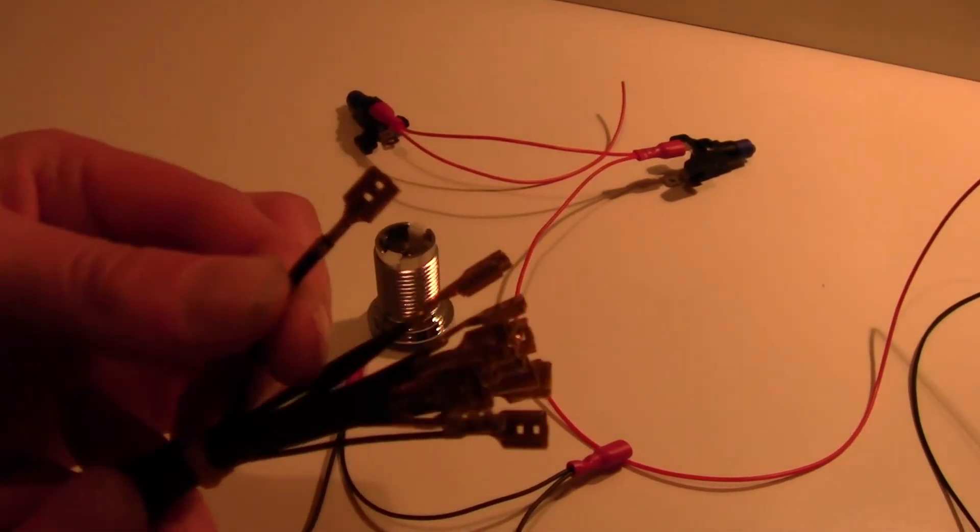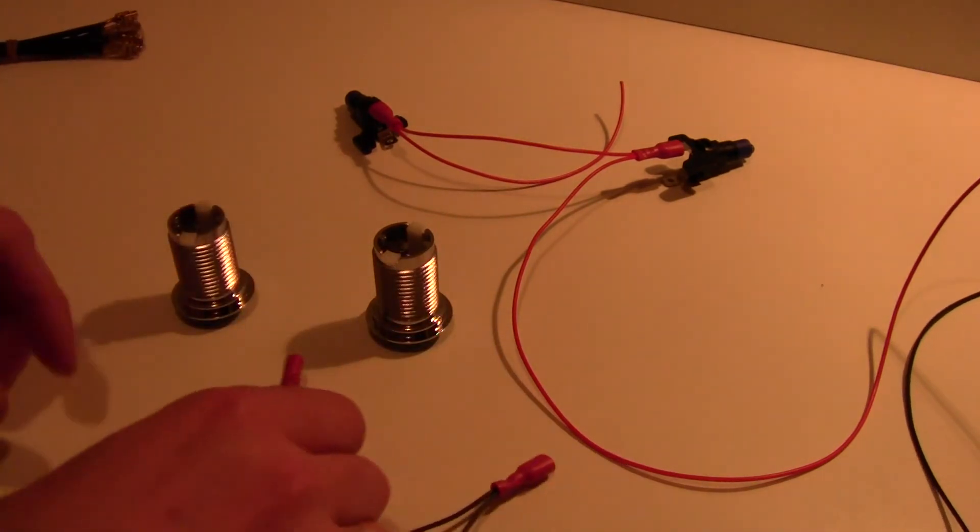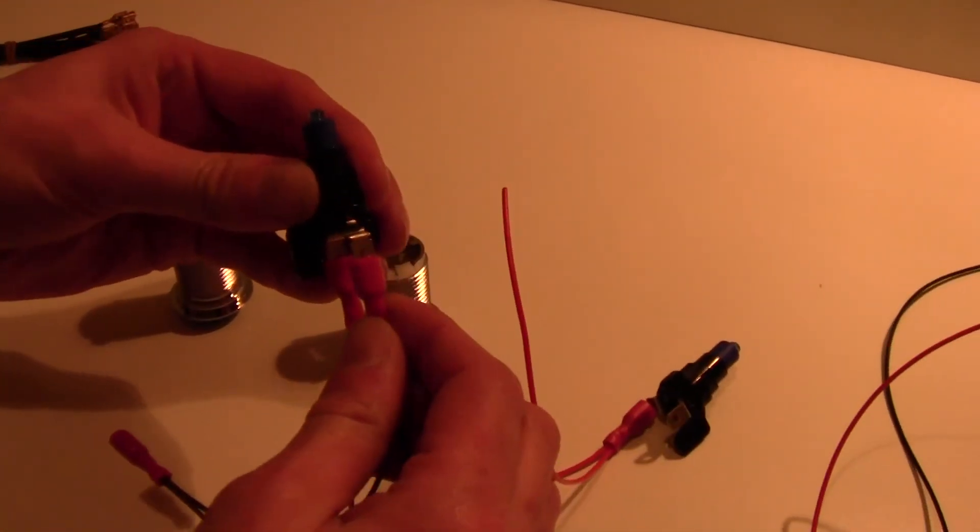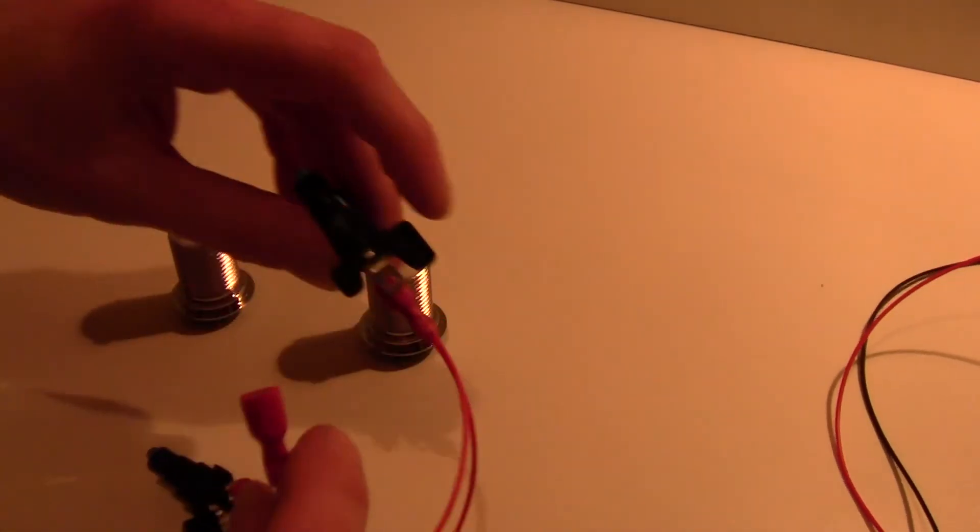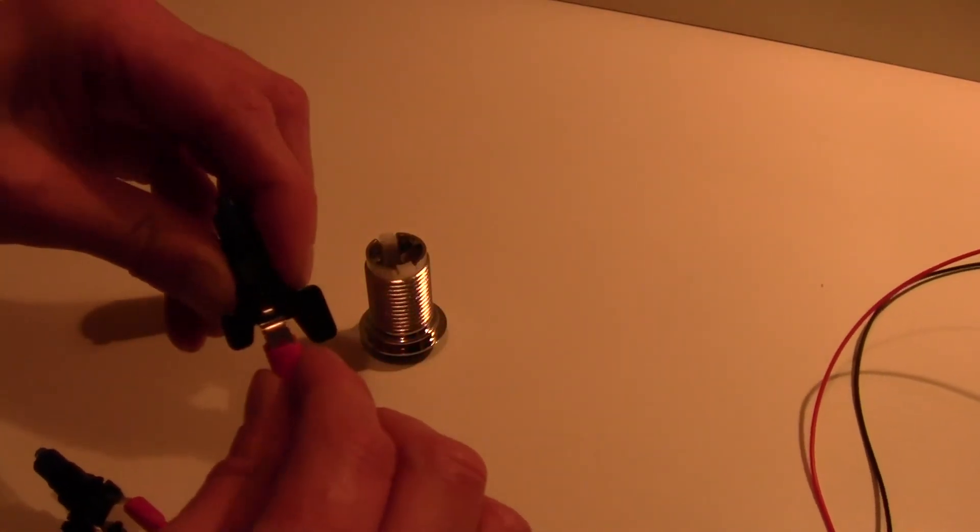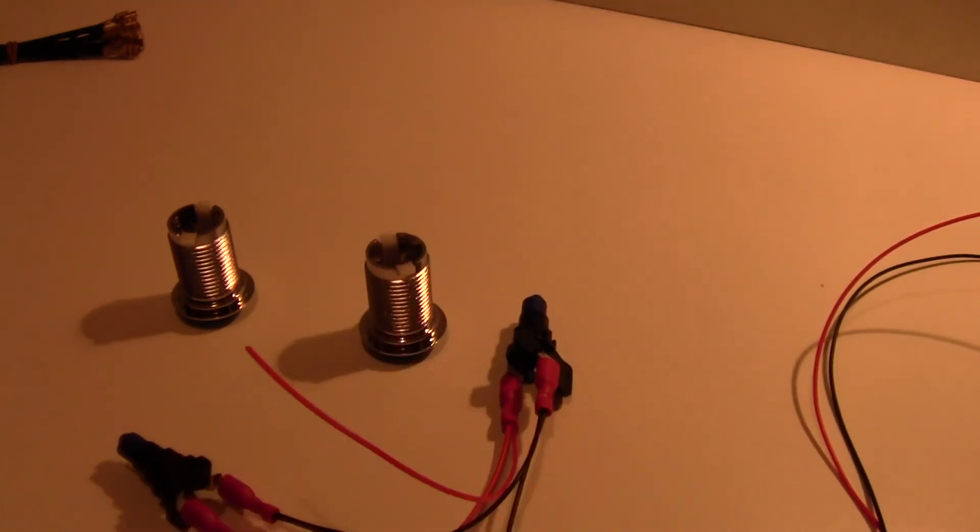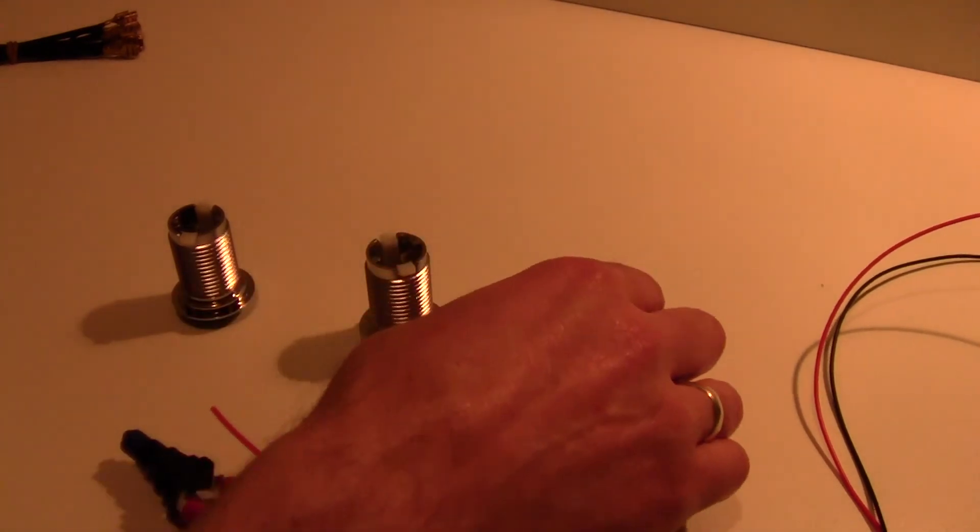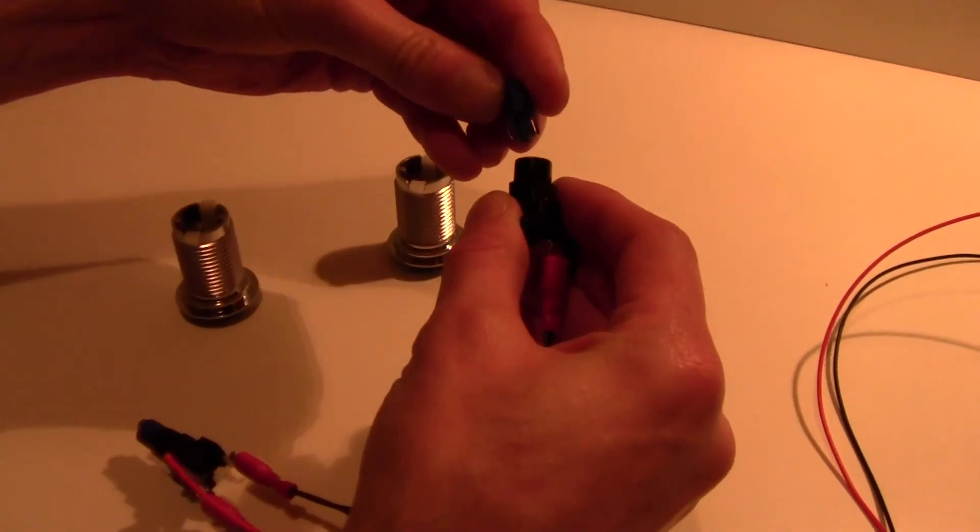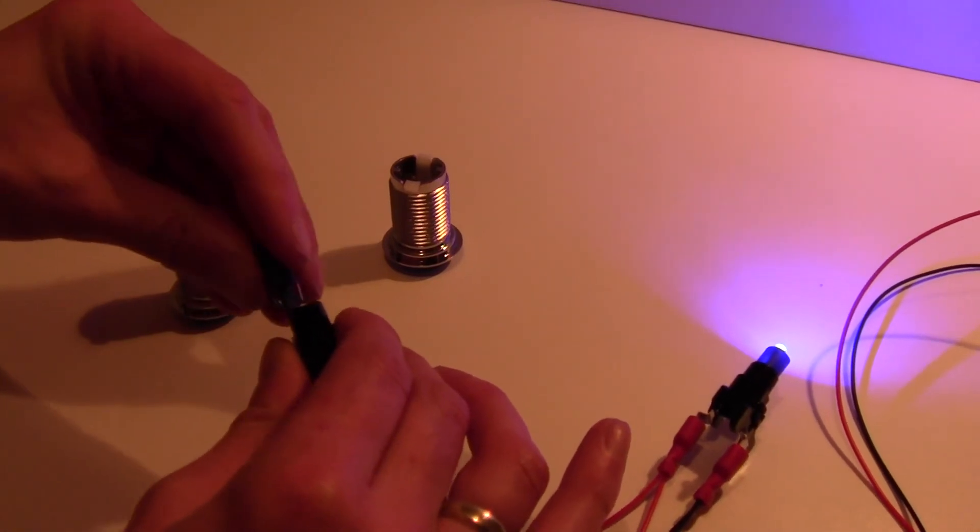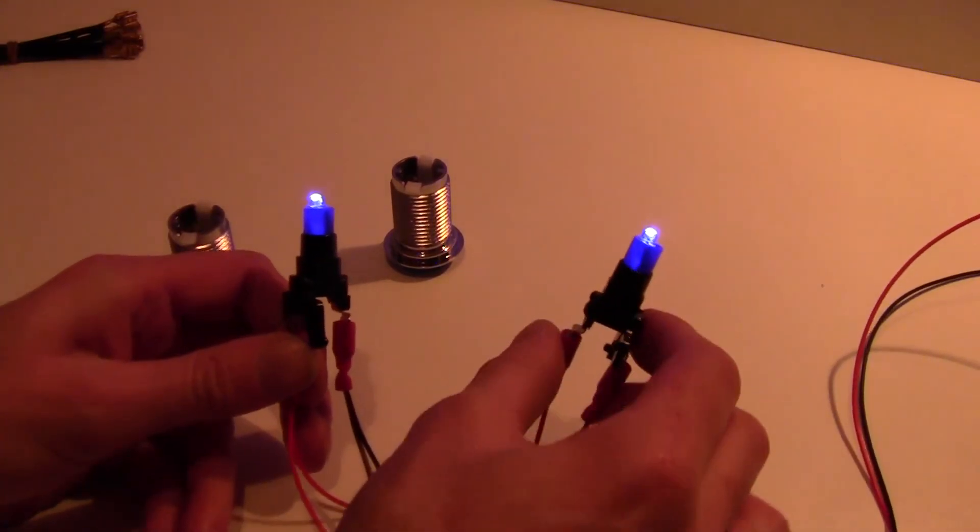We have one negative, one positive. Let's just turn on the power supply. And none of them are lit up. If we just take the bulb out, turn it around, voila. Same with this one, turn it around the other way. Two, that's it.